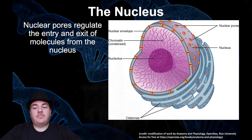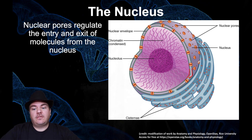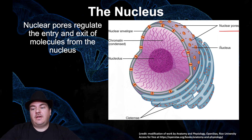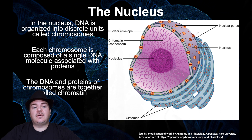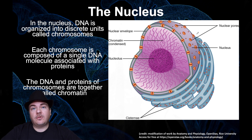Things need to have the ability to enter and exit the nucleus, but the nucleus has this double phospholipid bilayer — a barrier — around it. So how can things get into and out of the nucleus? There are things called nuclear pores, and the nuclear pores allow things to enter and exit the nucleus. In the nucleus, the DNA is organized into discrete units called chromosomes.